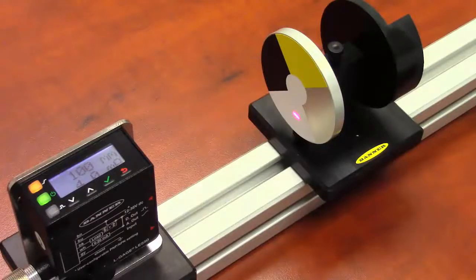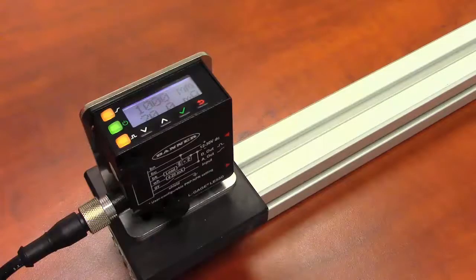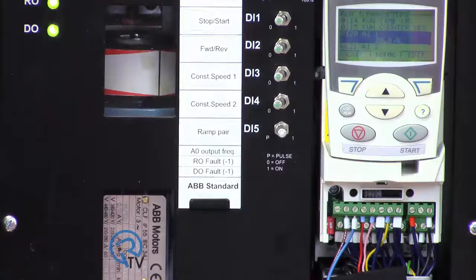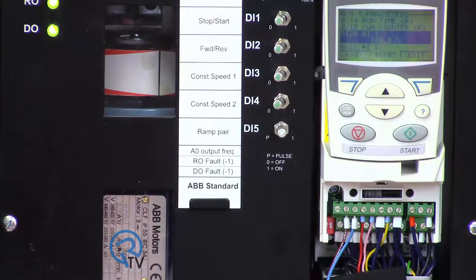With default settings, the sensor provides a 4 milliamp output at 100 millimeters and a 20 milliamp output at 1000 millimeters. Based on a percentage of full scale, we can confirm these readings with the drive. Again, 100 millimeters should be 4 milliamps and 1000 millimeters should be 20 milliamps.